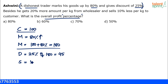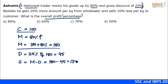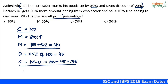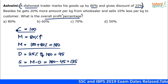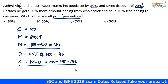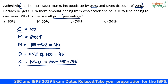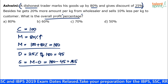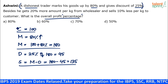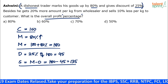Selling price is mark price minus discount: 180 minus 45 equals 135. So for a cost of 100 rupees, he sells at 135 rupees per unit. The profit is 35 rupees on every 100 rupees spent, giving a profit of 35 percent. But there's one more part — the quantity case — which also has to be considered.